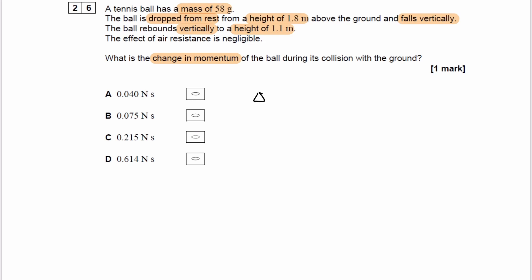So we're trying to work out delta p, which is pf minus pi. Let's draw a diagram to represent this.